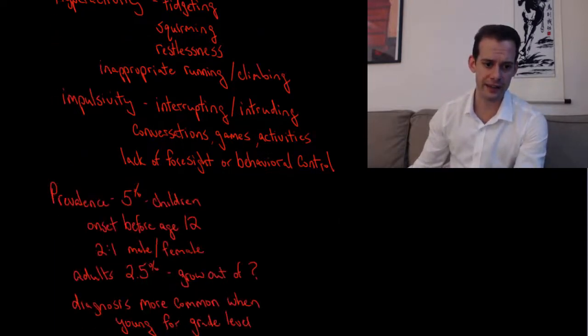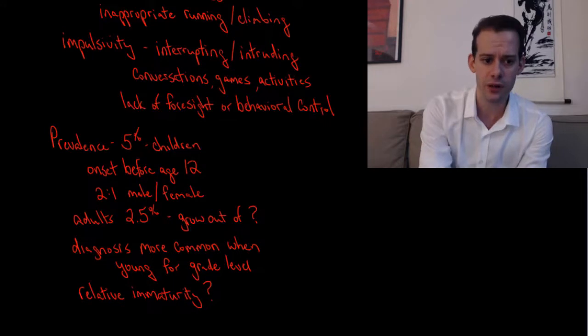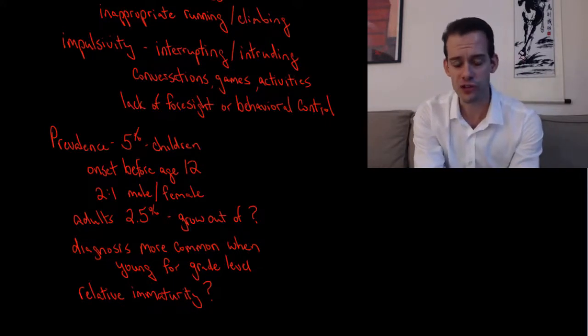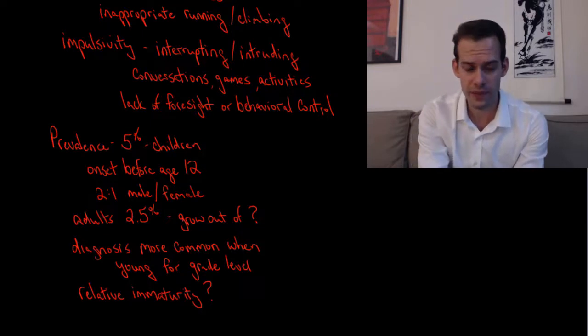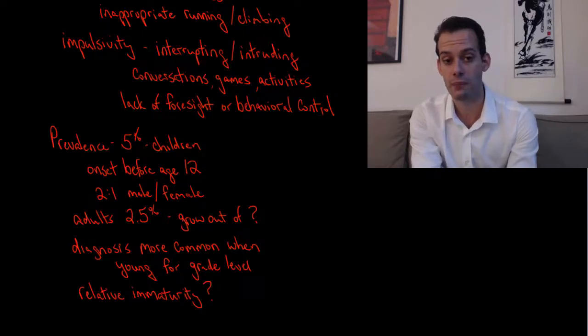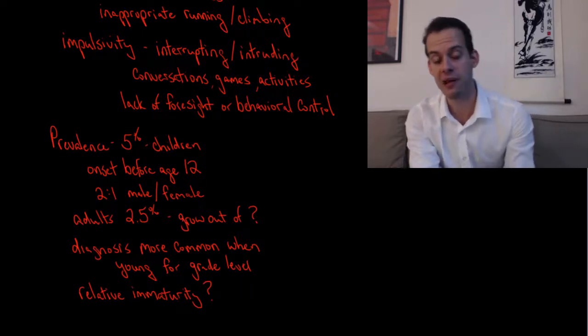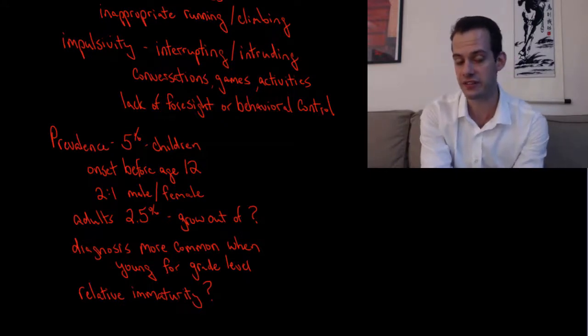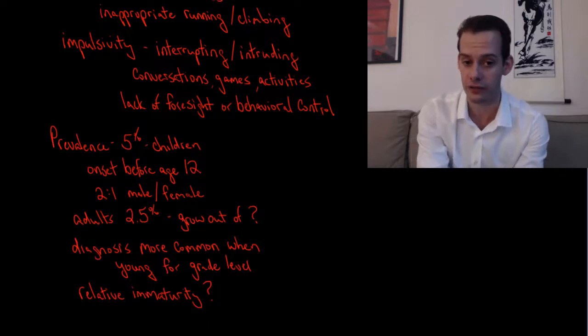It's estimated that about 5% of children will receive a diagnosis of ADHD, with most having the onset before age 12. There's a ratio of about 2 to 1 for males to females. The prevalence of ADHD for adults is much lower at about 2.5%, suggesting that this is a disorder that you can grow out of.